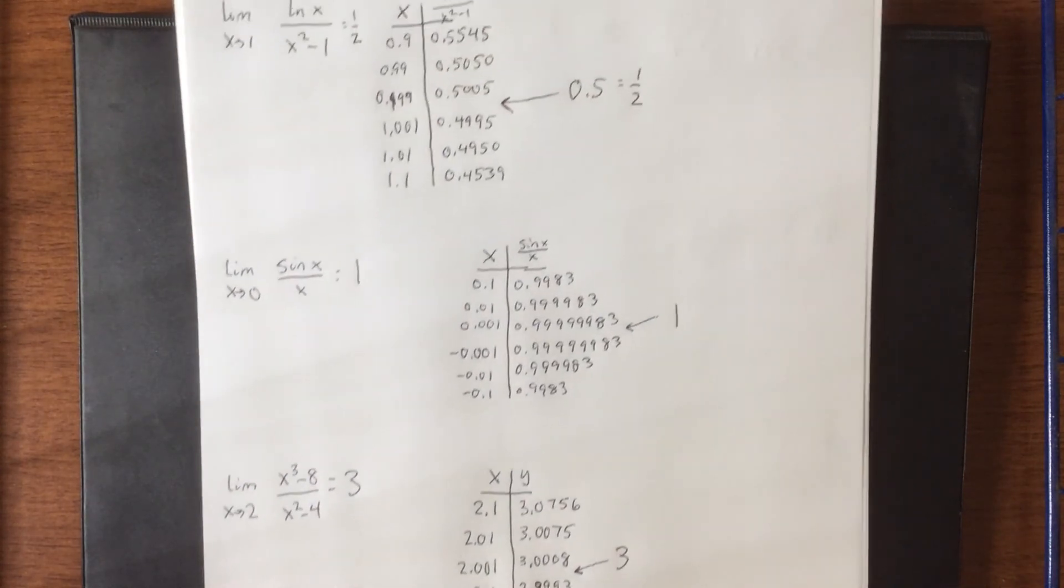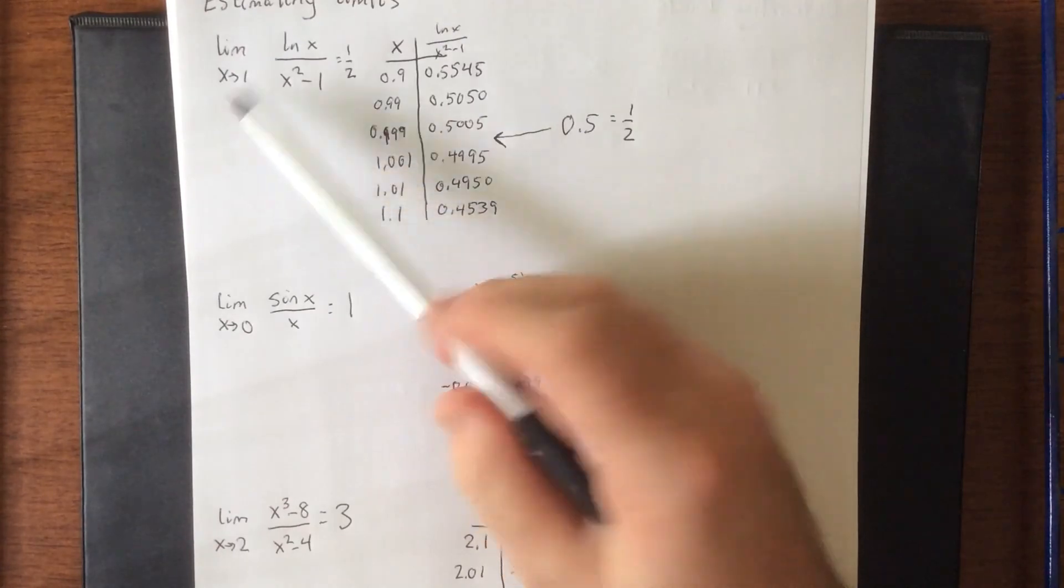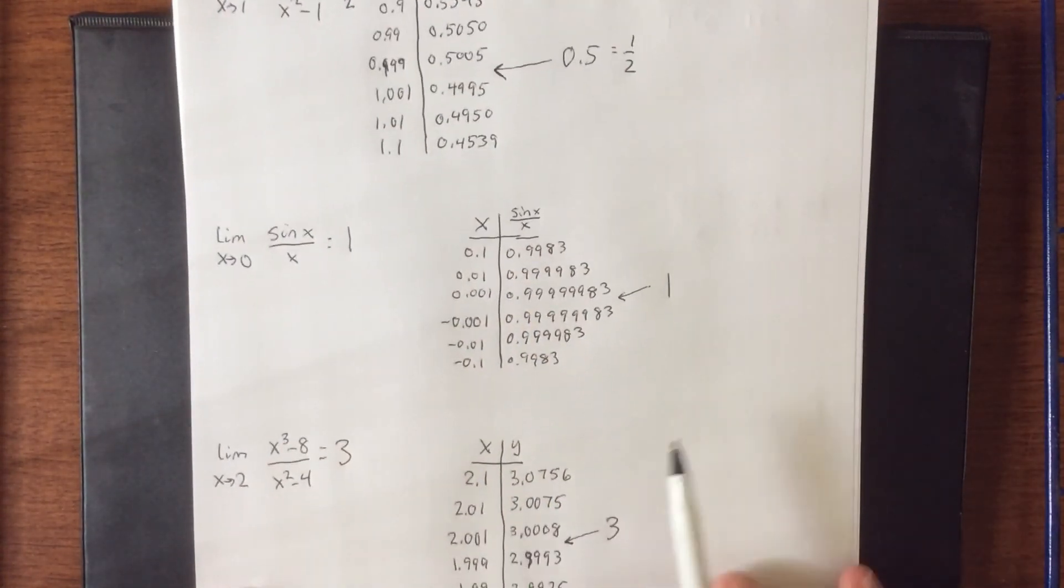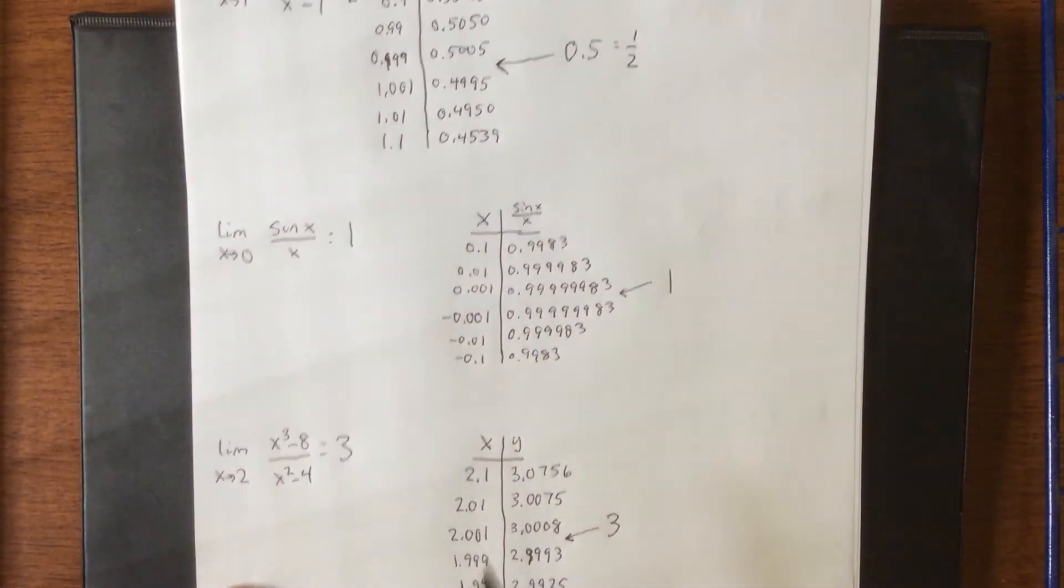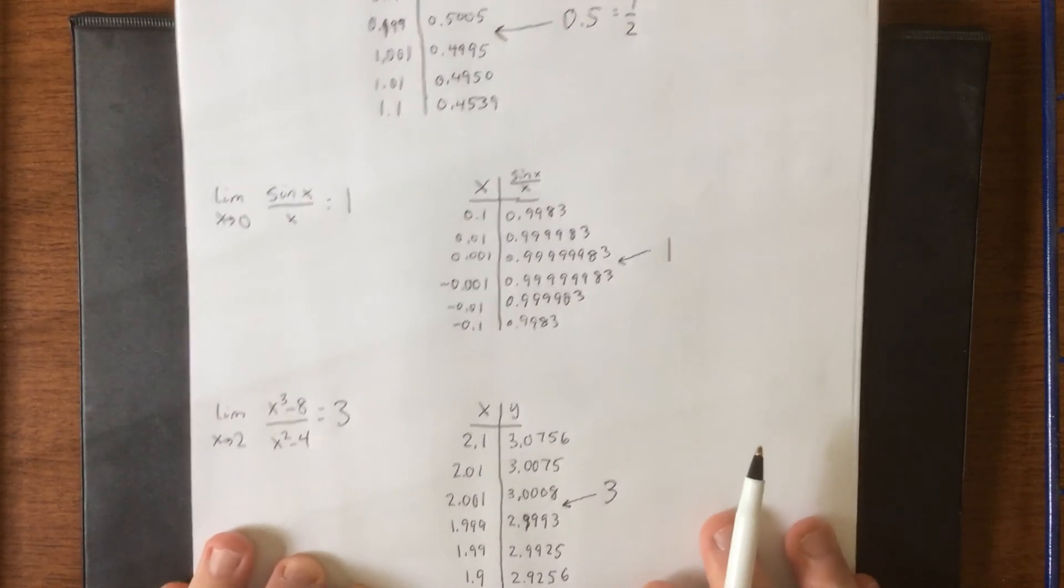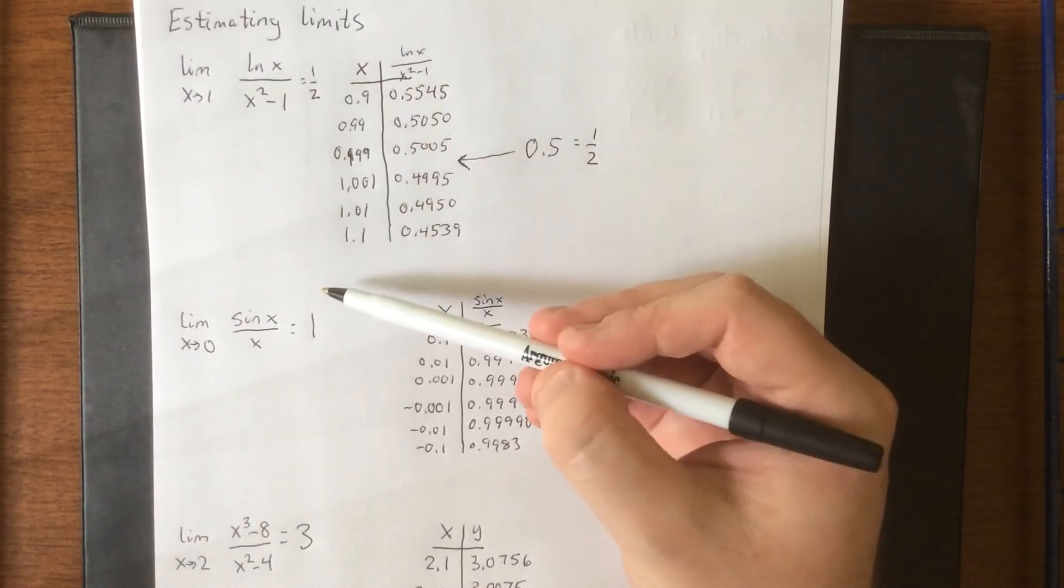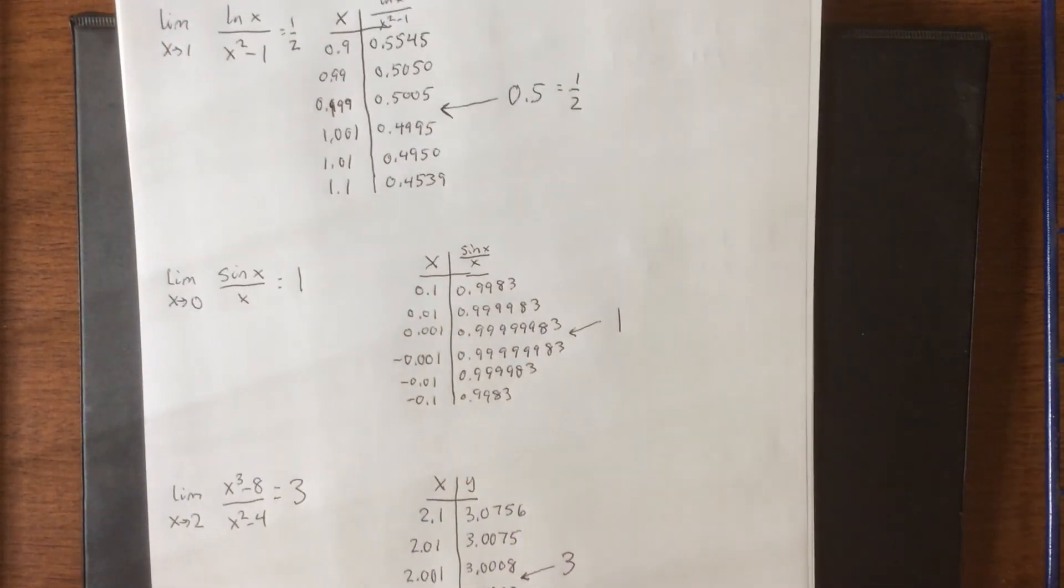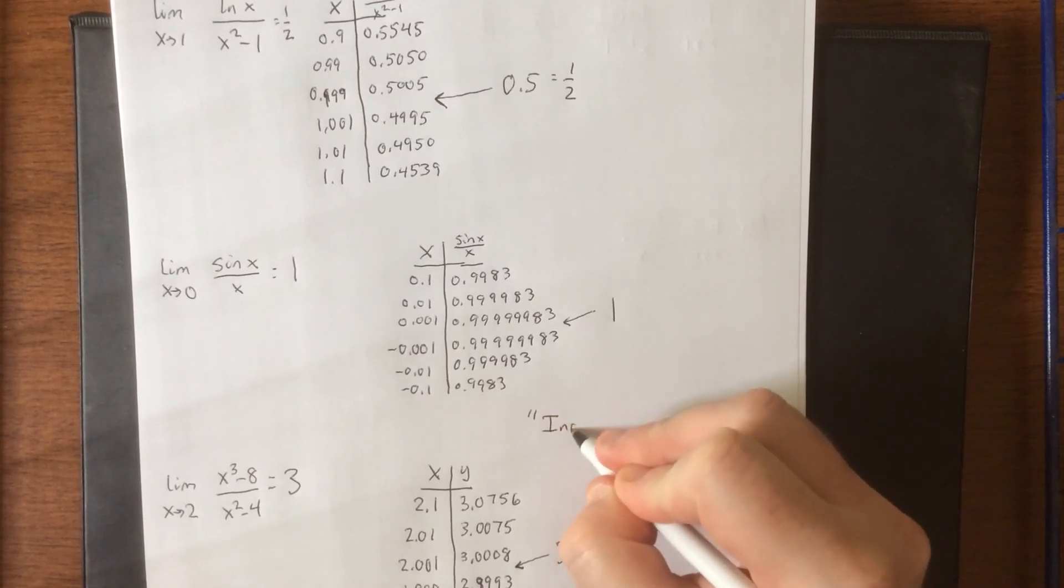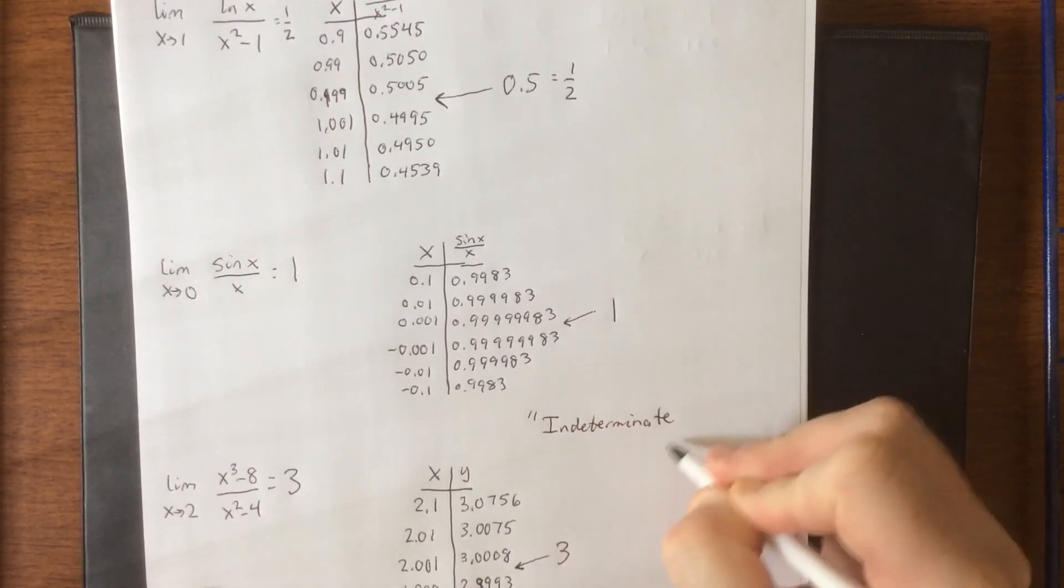Now in every single one of these cases, if I were to try to simply plug in whatever the given x value is, in the first case we got 0 divided by 0. In the second case we have 0 divided by 0. And in the third case we would wind up with 0 divided by 0. You'll notice that in all three cases, we got different numbers. One half in the first case, one in the second case, and three in the third case. The limit form 0 over 0 is referred to as an indeterminate form.